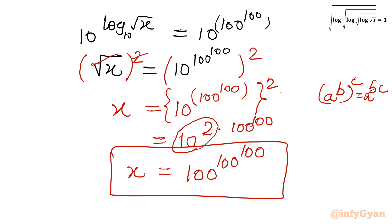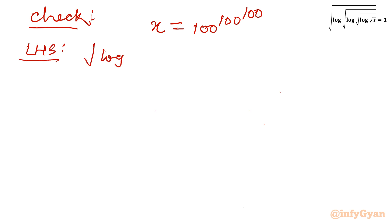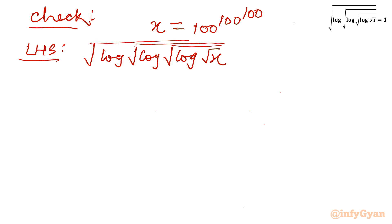Now I will check whether this value is correct or not. Let's verify. The answer is x equals 100^(100^100). Let me write our LHS: square root log, square root log, square root log. We will check whether it is 1 or not. Now I will consider log root x equals A, so let us calculate A separately. Log root x — root x means x power half. Now one property of log: log a power b, we will take this b out, so it will become b log a. So I will write half log x.